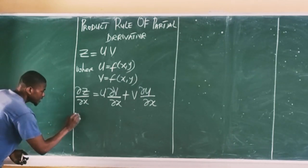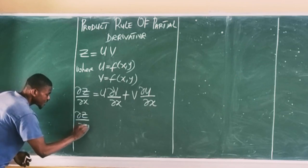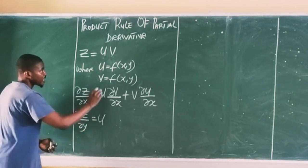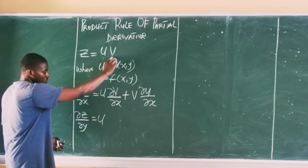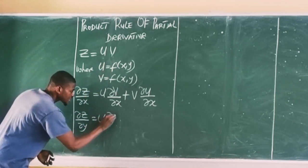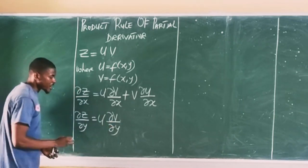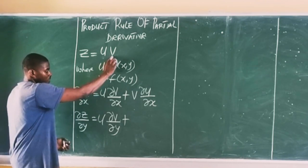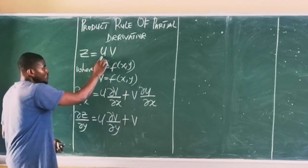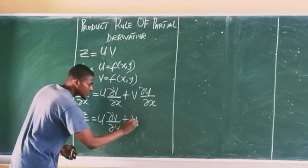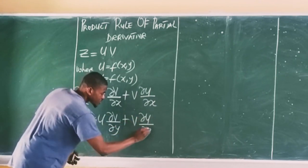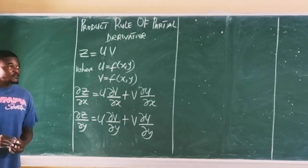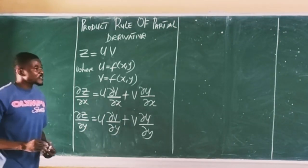If I am to find the partial derivative of Z with respect to Y, also keep U as constant, so I have U, then differentiate V partially with respect to Y, giving partial derivative of V with respect to Y. Plus, keep V constant, then V differentiates U partially with respect to Y, giving partial derivative of U with respect to Y. This is the formula for the partial derivative of a product function.